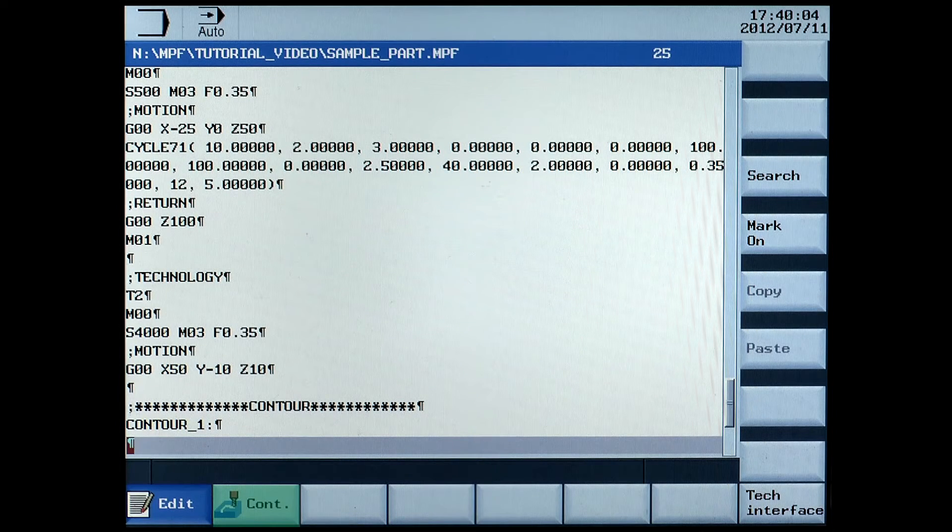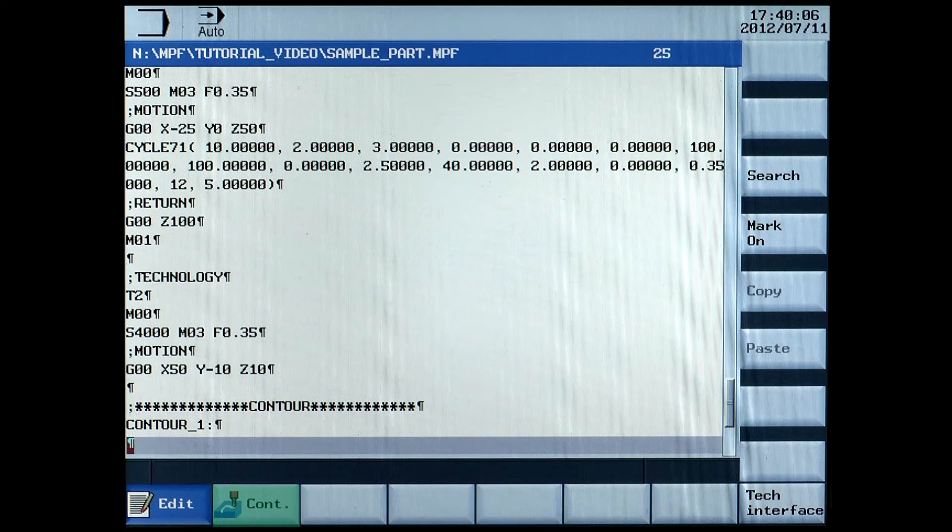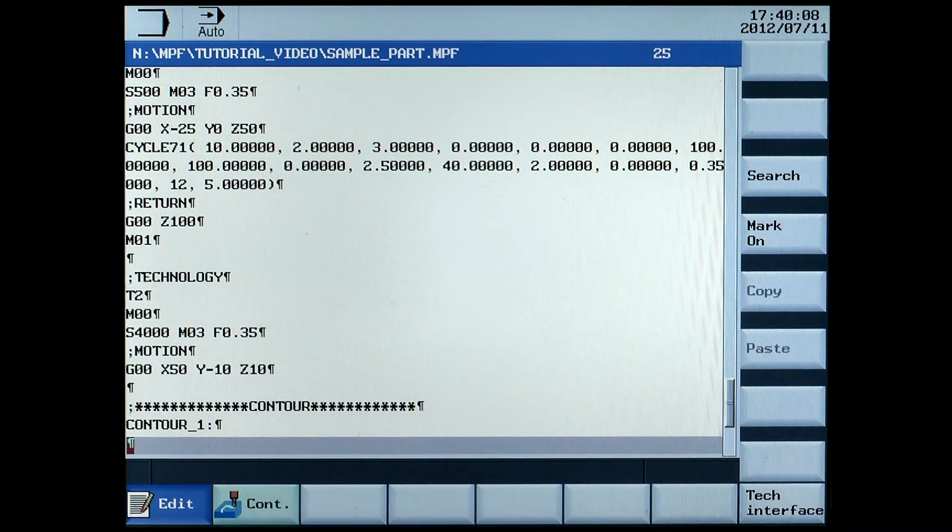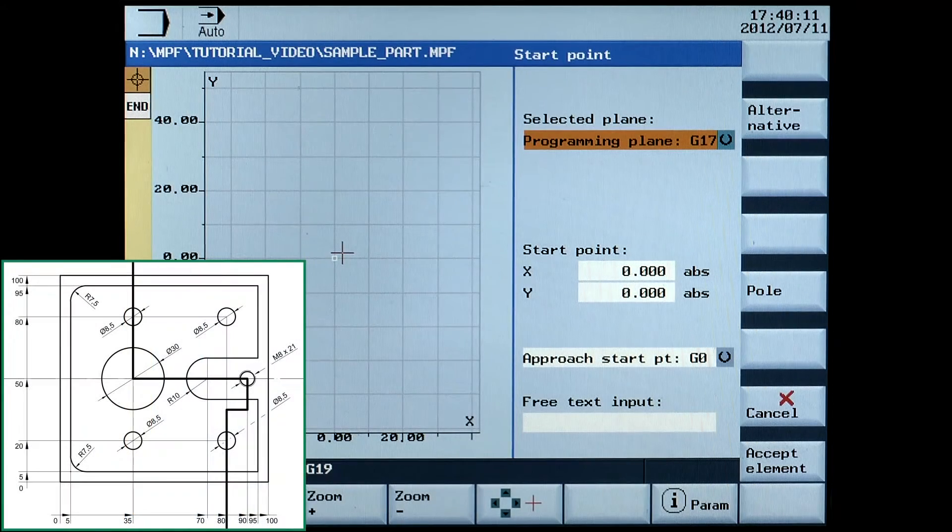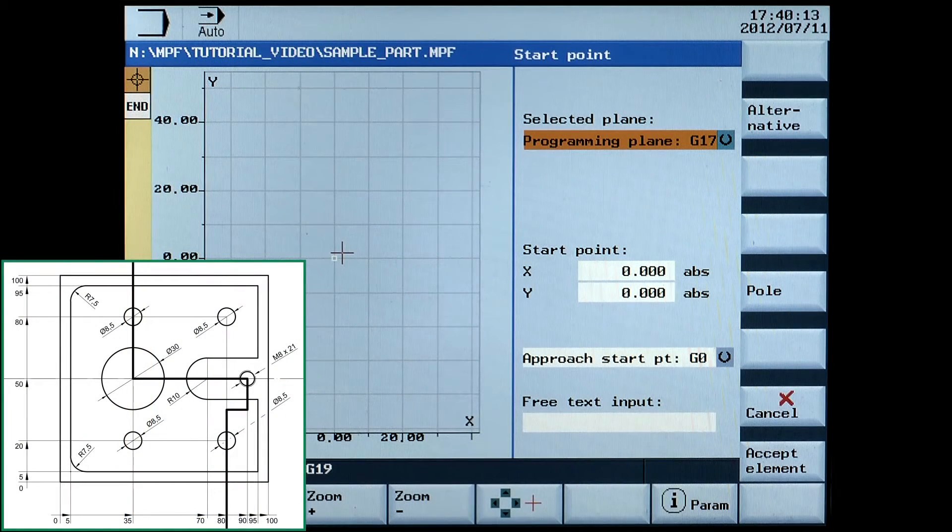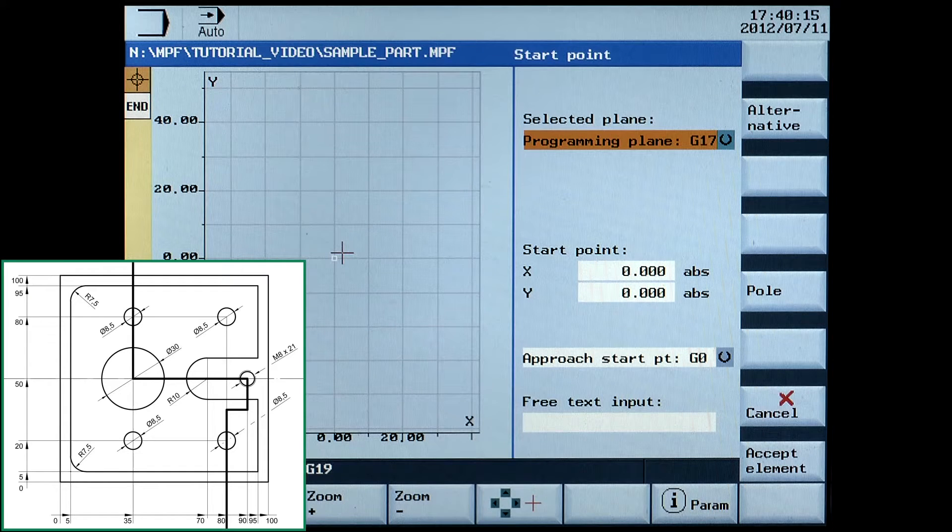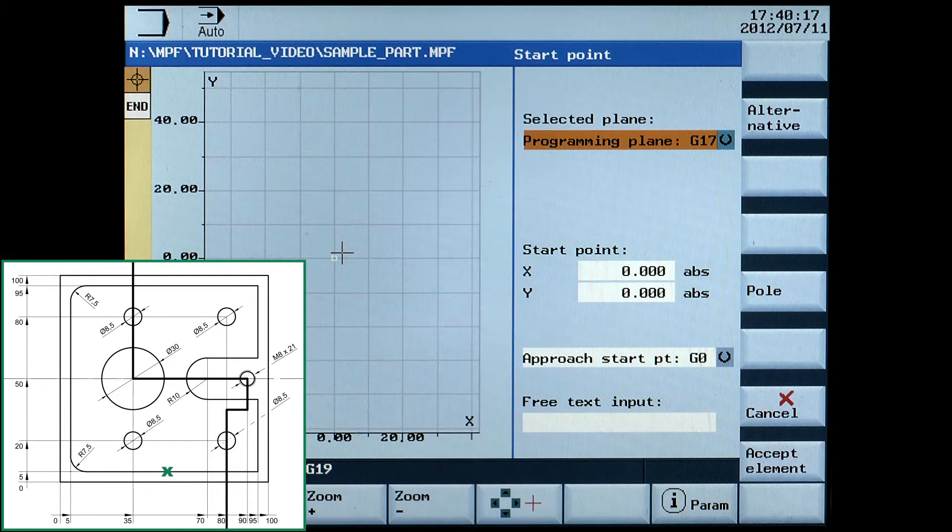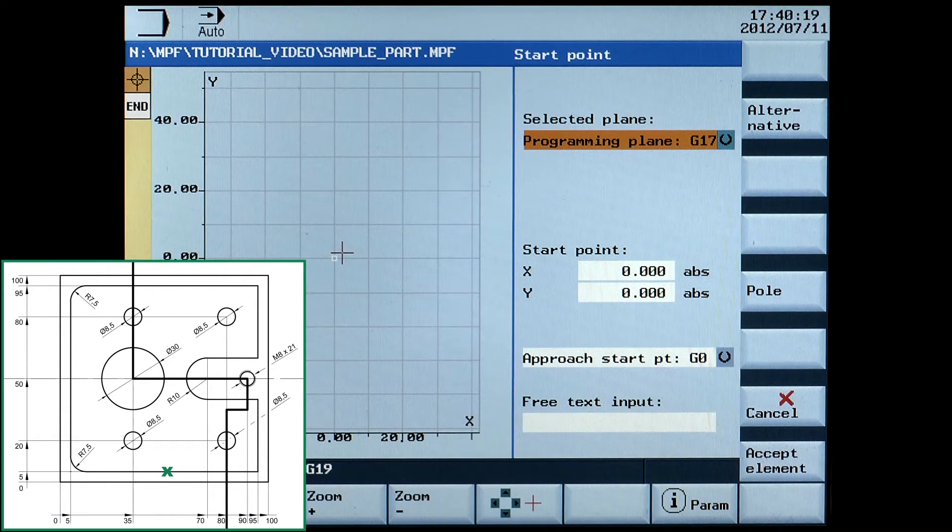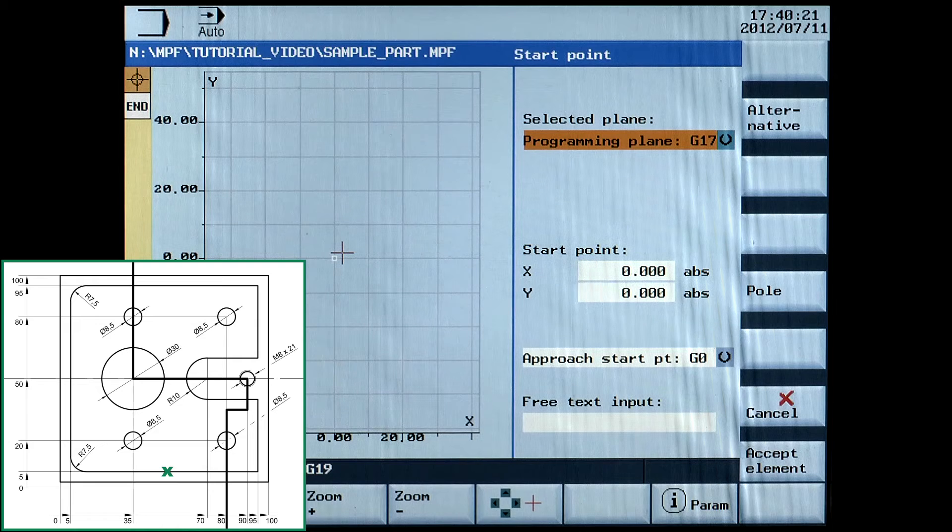Now press contour and start to define the contour of the sample workpiece. At first the starting point has to be defined. It will be on a convenient place on the contour. We enter the data the following way.